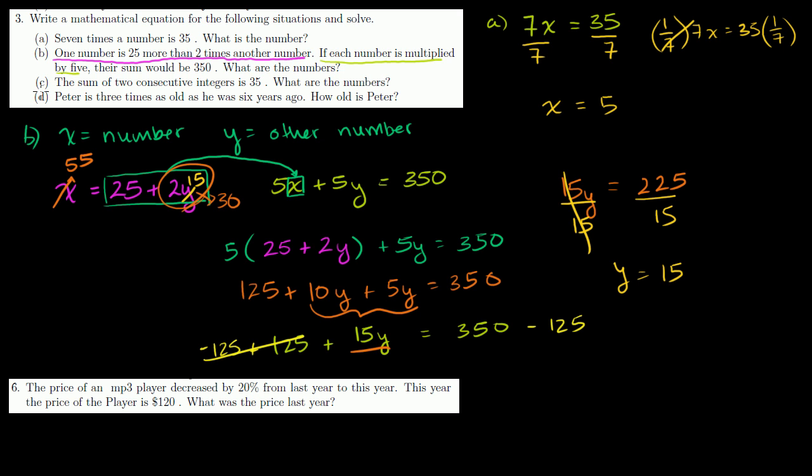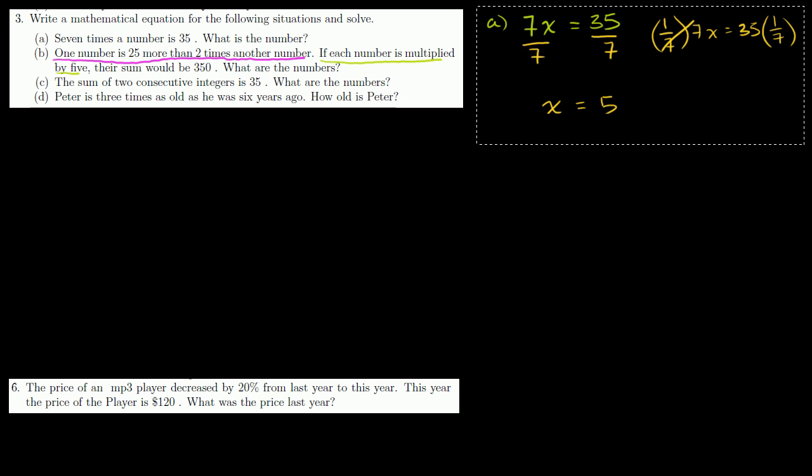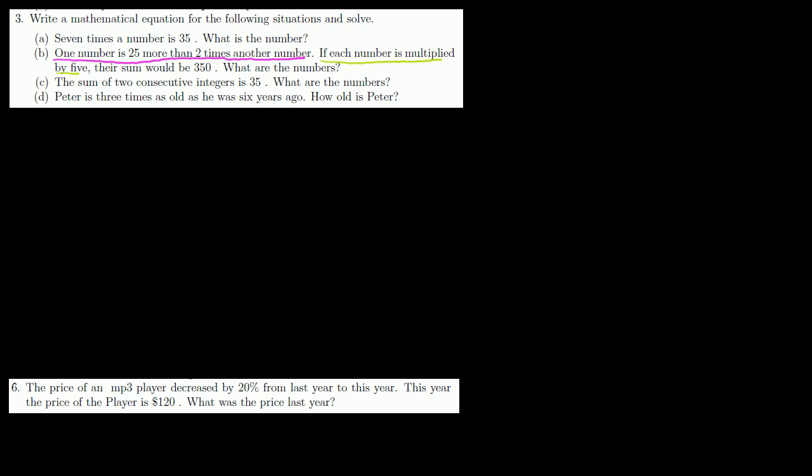Let me do part C. Part C. The sum of two consecutive integers is 35. What are the numbers? Well, let's say that x is equal to the first integer. First integer. Then what's the second integer going to be? Well, the second integer is just going to be one more than that. They're consecutive. They're one after another. So x plus 1 is equal to the second integer. And they're saying the sum of both of these numbers is 35. So x plus the number that comes right after x, x plus 1, is equal to 35.